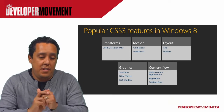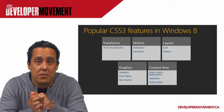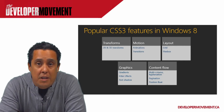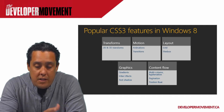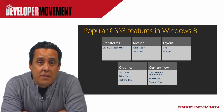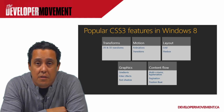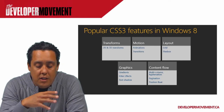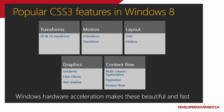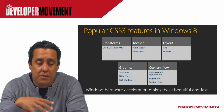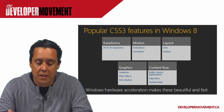Some of the popular CSS3 features in Windows 8 include 2D and 3D transforms, motion with animations and transitions from your CSS file, layout with grid and flexbox, graphics like gradients, text shadows, and filter effects, and content flow — great for news-type applications with multiple pages or columns. Hardware acceleration is built into the browser, leveraging the hardware so all transitions and motions are fast and performant without any stuttering.